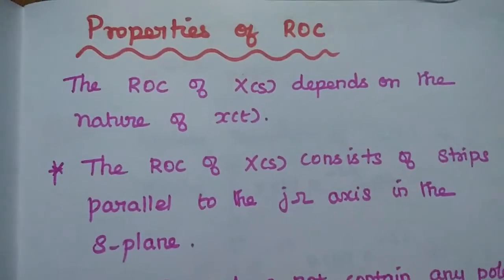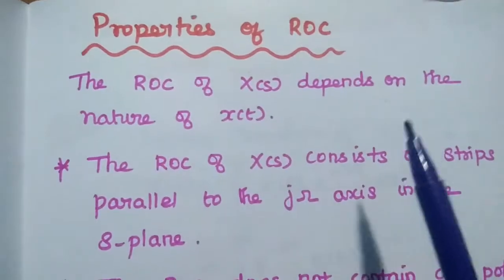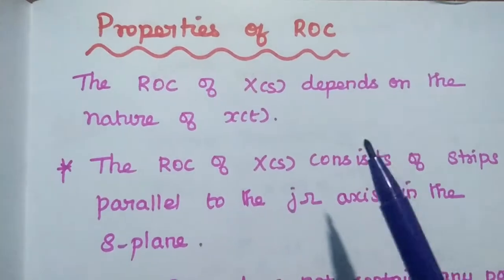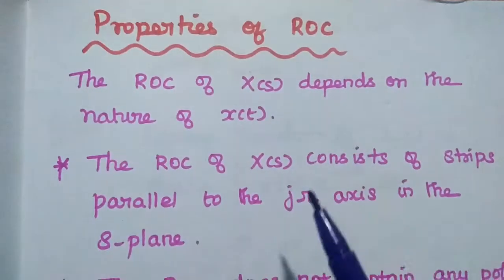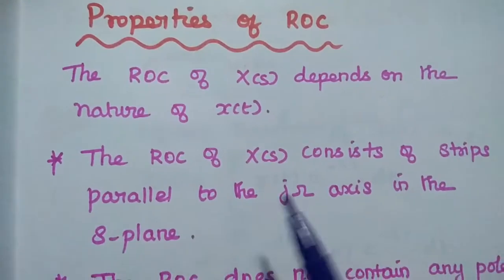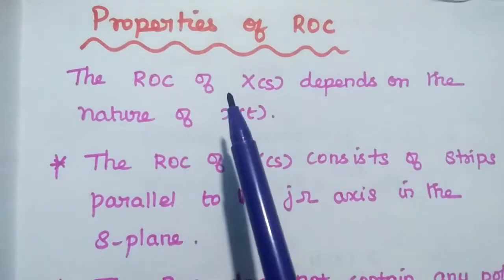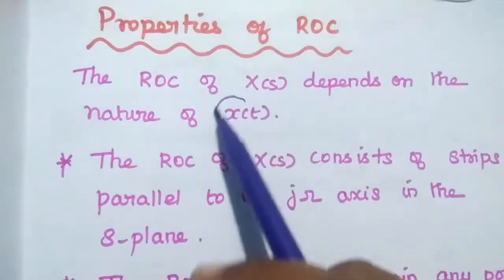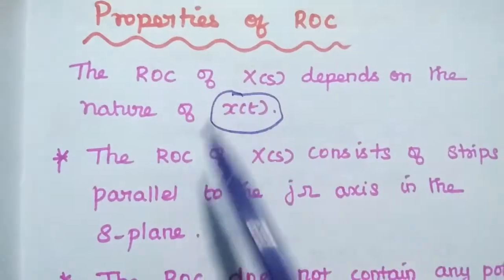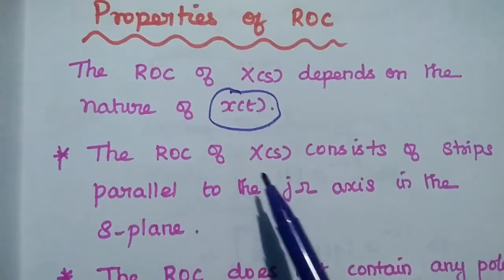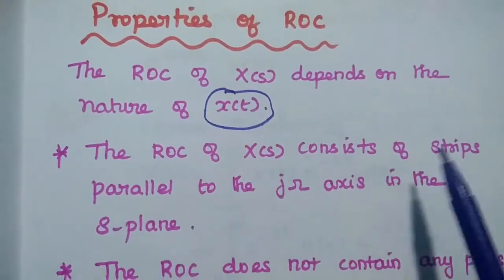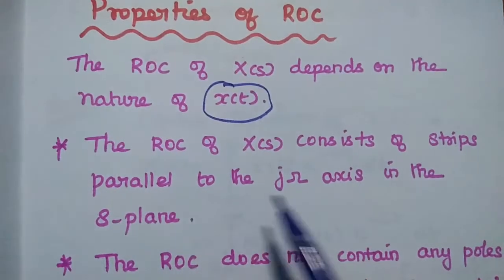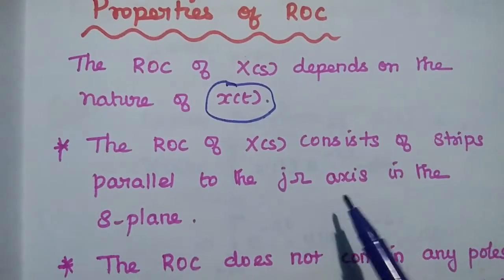Next are the properties of ROC. There are certain properties to be followed in the region of convergence. The region of convergence depends on the nature of X(t). The ROC of X(s) consists of strips parallel to the j-omega axis.